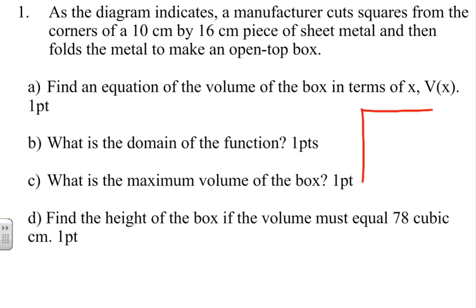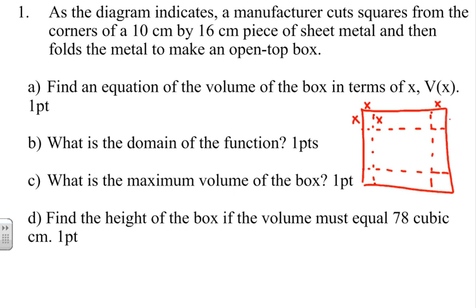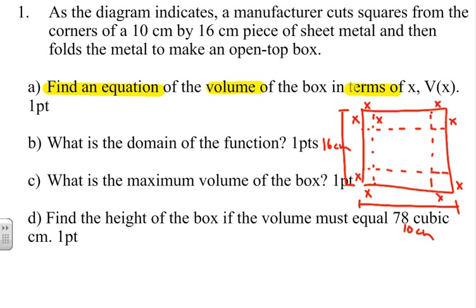Here's the diagram we're going to be using. As the diagram indicates, a manufacturer is cutting out squares of size x from the corners of a sheet of metal — those little corners are all equal to x. The sheet is 10 centimeters by 16 centimeters, and the metal folds up to make an open-top box. Our goal is to find an equation for the volume of the box in terms of x, written as V(x).